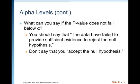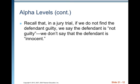What can you say if the p-value does not fall below alpha? You should say that the data have failed to provide sufficient evidence to reject the null hypothesis. Don't say that you accept the null hypothesis, because that would indicate you have evidence for it — and that's not really the case. You have evidence that's not against it. Recall that in a jury trial, if we do not find the defendant guilty, we say the defendant is not guilty — we don't say the defendant is innocent.